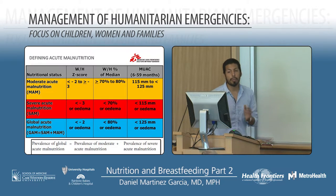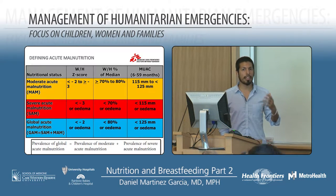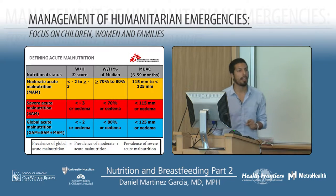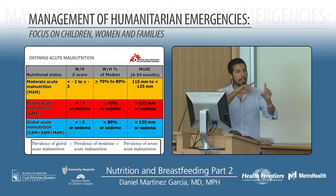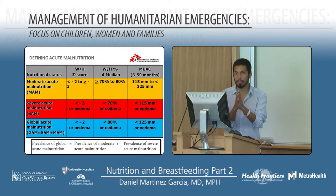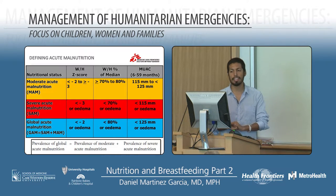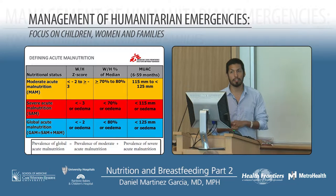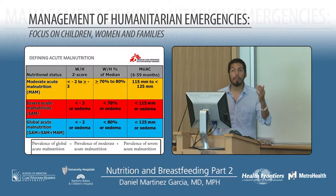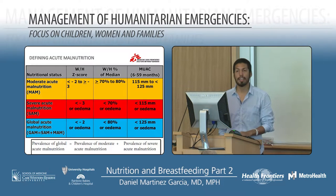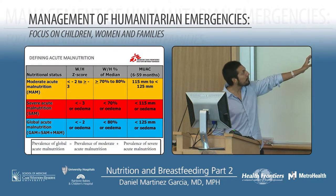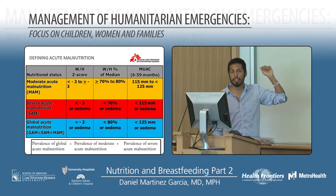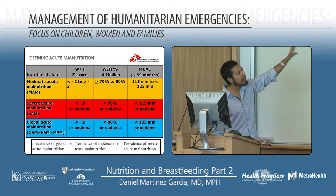How do we define malnutrition? We use anthropometric indicators. One is the weight-for-height: you measure the relationship between weight and height, take normality bell curves of the population, and the farther you are from the norm, the more malnourished you are. Below two standard deviations from the norm but above three standard deviations is moderate acute malnutrition. Below three standard deviations is severe acute malnutrition. Global acute malnutrition (GAM) is the sum of severe plus moderate acute malnutrition, and this is your key indicator.